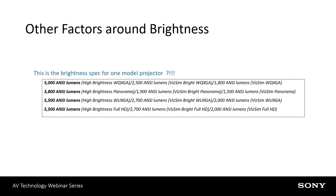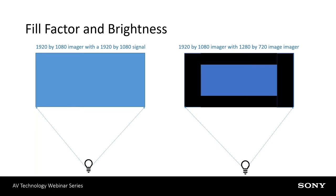One thing to keep in mind is something called fill factor. If I have a 1920x1080 projector and I feed it a 1920x1080 signal, I fill the entire imager and get the specified brightness. But if I do what's known as a direct pixel map — feeding a 1920x1080 imager a 1280x720 image — I'm not filling the entire panel. The problem is the light is still filling the entire panel, so that dark area is wasted light. The same projector will not be quite as bright when you do a direct pixel map, and that should be considered as well.